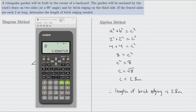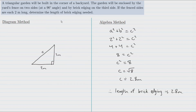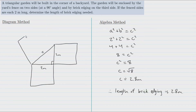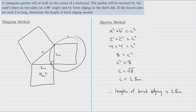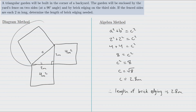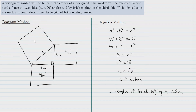We could avoid the algebra altogether and just use a diagram to find the length of brick edging needed. To do so, we draw squares on the sides of our triangle, because the Pythagorean theorem is really all about the areas of those squares. This square has side lengths of 2 meters, so its area is 2 times 2, which is 4 meters squared. The same is true for the other square — its area is also 4 meters squared.